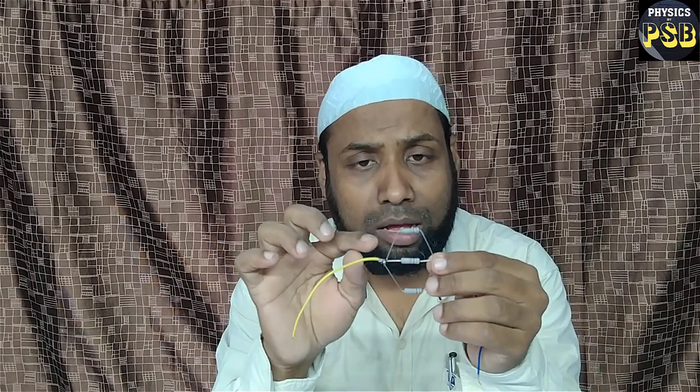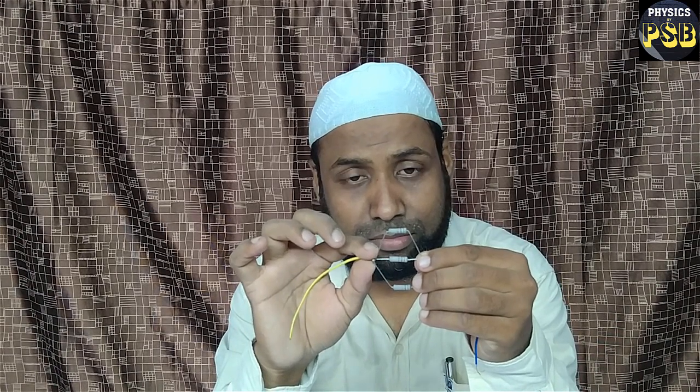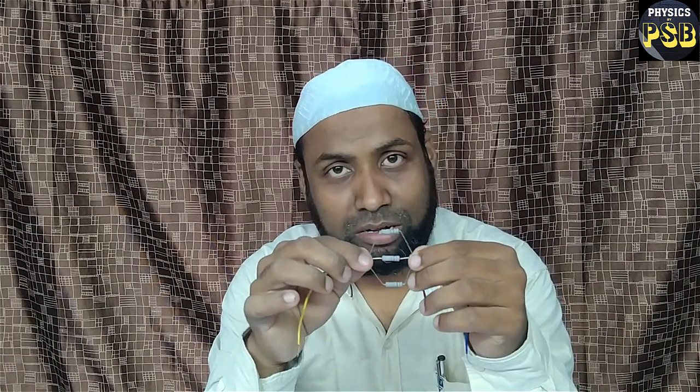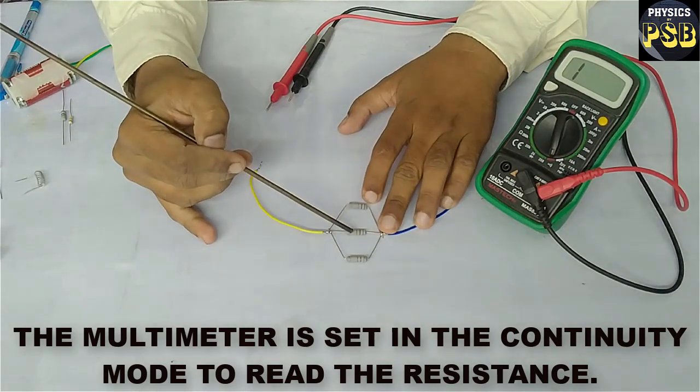When the same ends of the resistors are connected together, we call such combination a parallel combination. We will explore what happens when resistors are connected in parallel and what will be their total resistance.